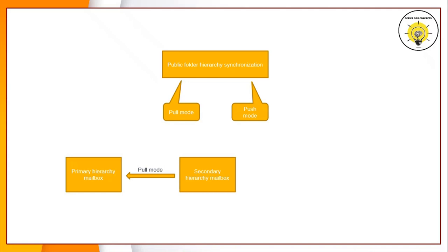This process is accomplished with the help of the service host process and the MRS proxy service running on the server hosting public folder mailboxes. There are defined intervals when this synchronization occurs. If a user is connected to the public folder content mailboxes, synchronization occurs every 15 minutes. If the user is connected to the public folder, replication occurs every 24 hours. And if any changes are made within public folders, such as a new public folder being created, synchronization occurs immediately, and users will be able to see the public folders within their email applications.